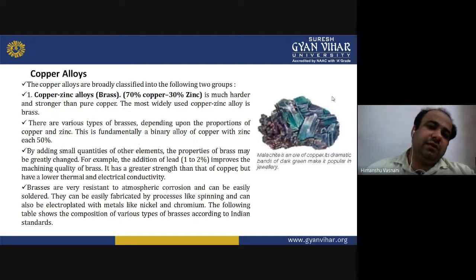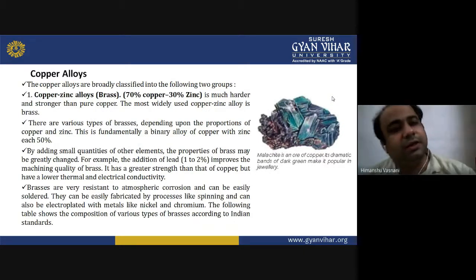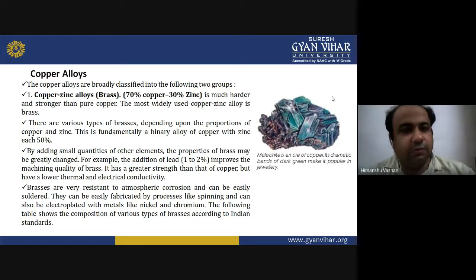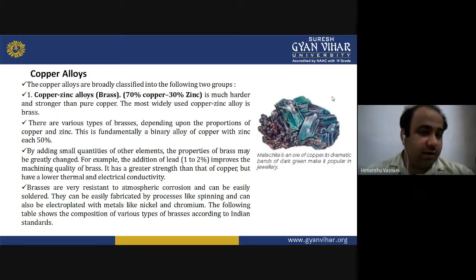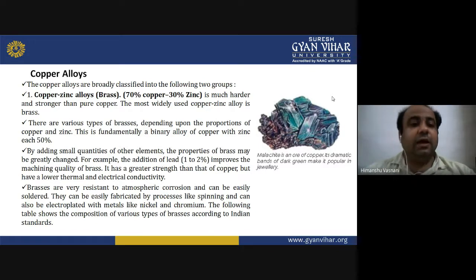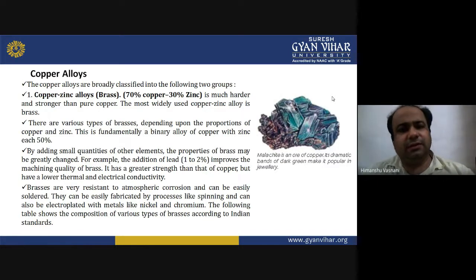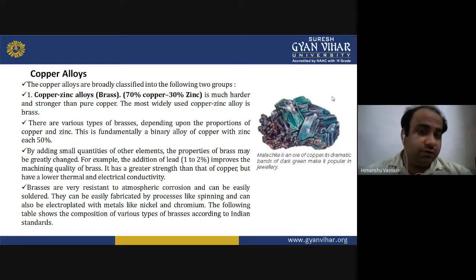Copper alloys are classified into two major groups. The first is the copper-zinc alloy, commonly known as brass. Brass contains approximately 70% copper and 30% zinc. It is much harder and stronger than pure copper and is the most widely used copper-zinc alloy. There are various types of brass depending upon the proportions of copper and zinc — fundamentally a binary alloy.